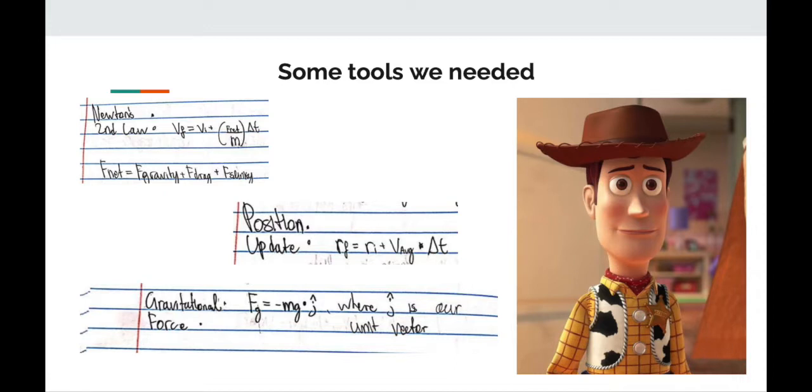Finally, Woody was nice enough to provide us with the gravitational force formula, which says that the force of gravity is going to be negative mass times the gravitational constant times our unit vector, our unit vector telling us which direction our moment is in.